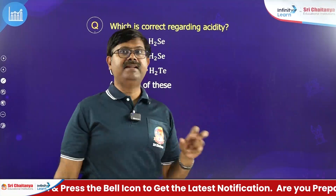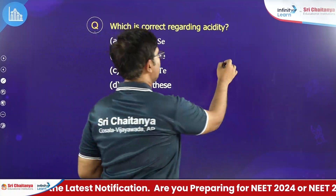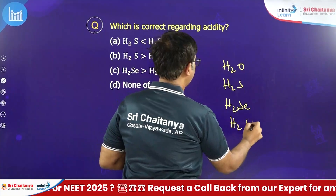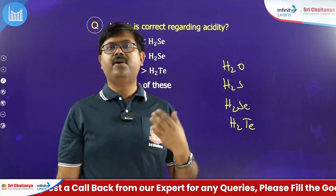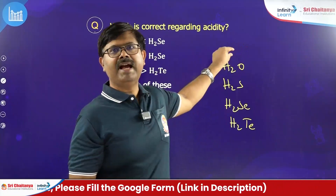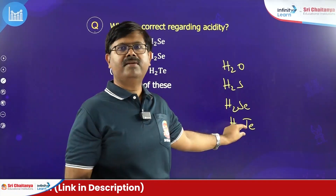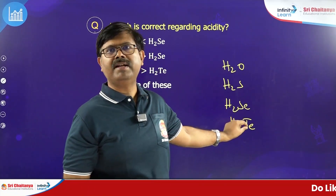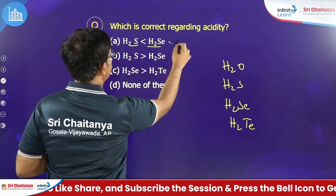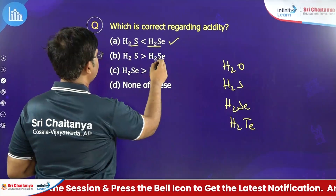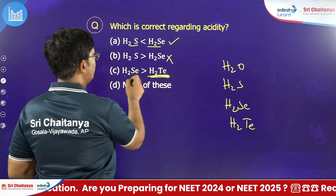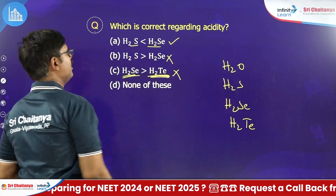Which is correct regarding acidity of H2S and H2Se? As you go down the group, bond length is increasing, so bond strength is decreasing. The O-H bond is strong, therefore difficult to break as H+. The tellurium H bond is weak because of higher bond length, so it is easy to break as H+, making it more acidic. Therefore the correct order is H2S < H2Se < H2Te. The first option is the answer.